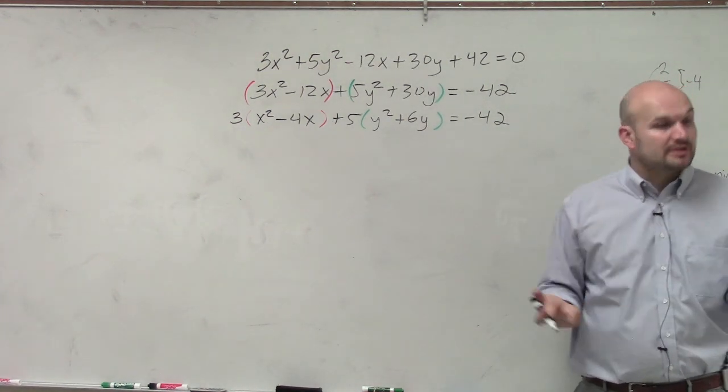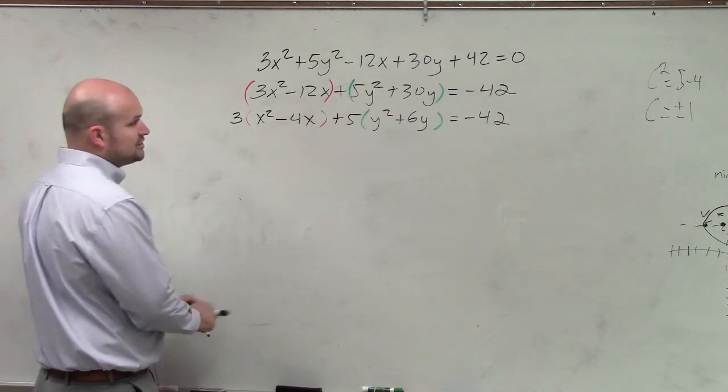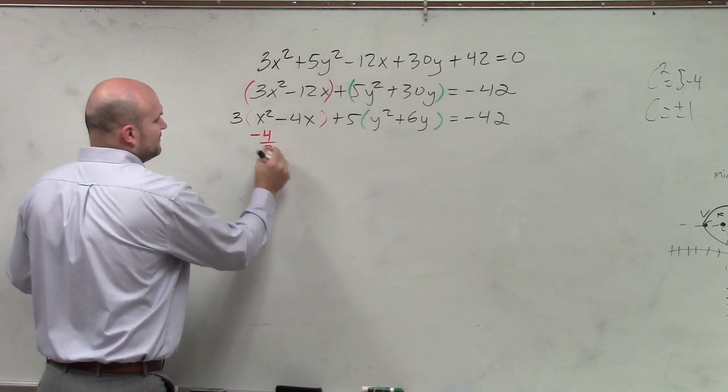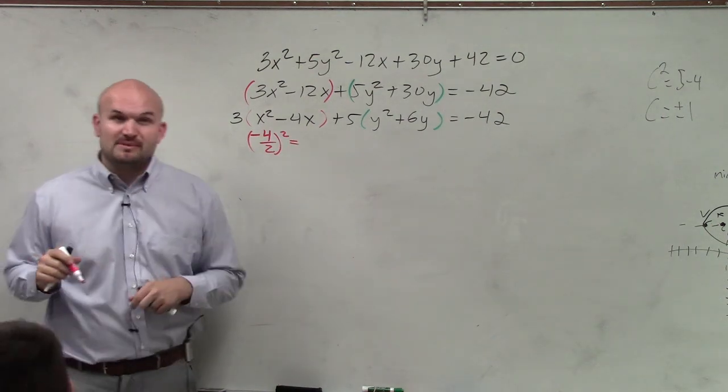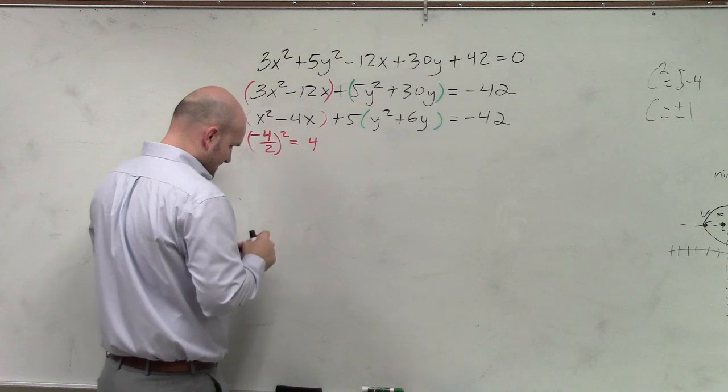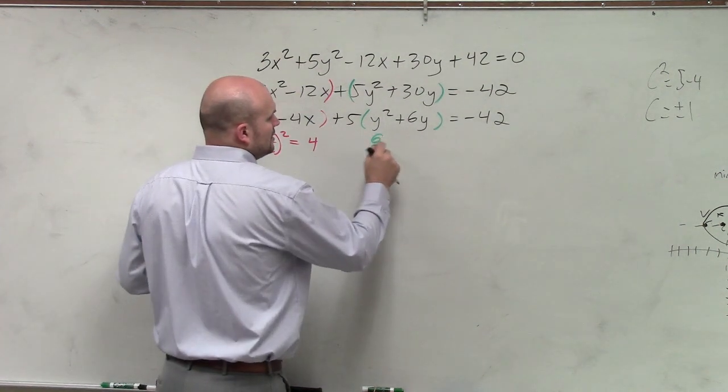Now we're going to do the completing the square portion. So remember, completing the square is basically taking your linear term, your b, dividing it by 2, and squaring it. So in this case, it's -4 divided by 2 squared. So -4 divided by 2 is -2. -2 squared is going to be 4. And therefore, we take 6, 6 divided by 2 is 3, 3 squared is 9.